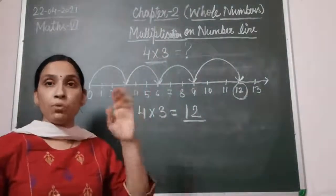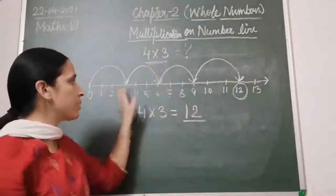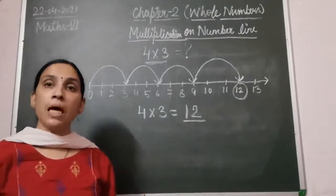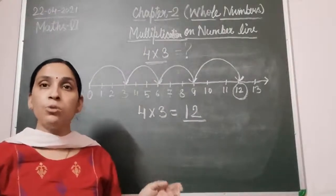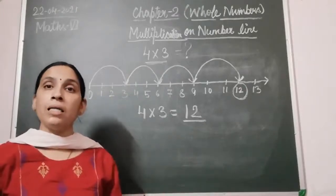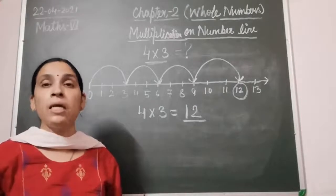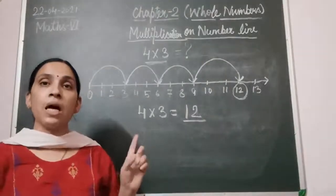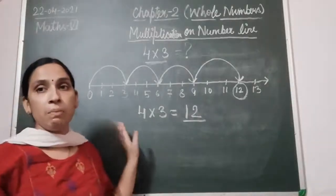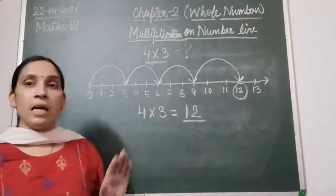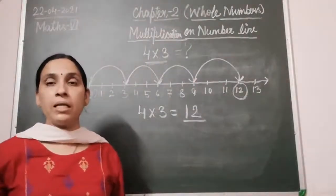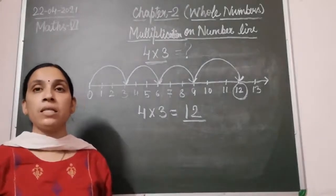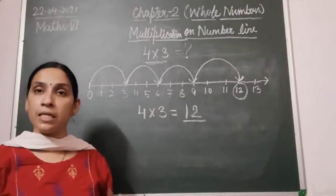So in multiplication on the number line, you always start from zero. The smaller number is the step size and the other number tells you how many times to jump. In addition, you stand on the first number and jump right. In subtraction, you jump left. But in multiplication, your jumps always start from zero and go towards the right. This is an introduction to number lines in Class 6 using whole numbers.